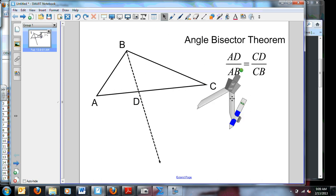Alright, so here's the picture that we saw in class. We said this ratio of AD to AB on this half of the triangle equals CD divided by CB.